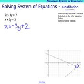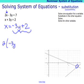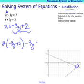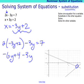Once I have that, now I'm going to take the value of x and substitute it in for x everywhere I see an x in the other equation. So I'd have 2 times negative 3y plus 2 minus 3y is equal to 7. Then I'll proceed to solve that equation for y.